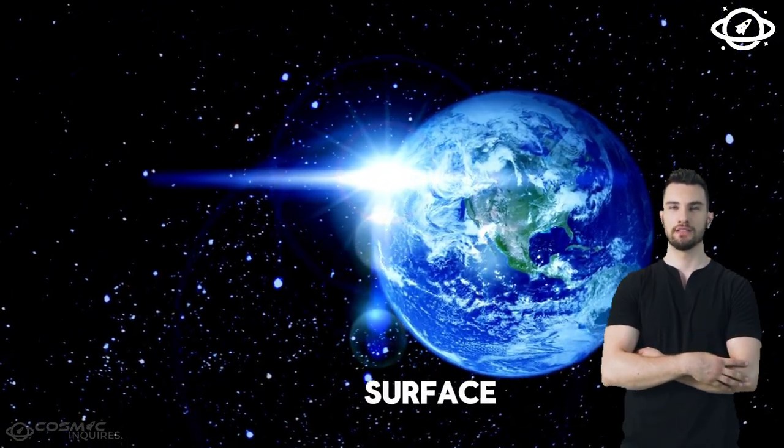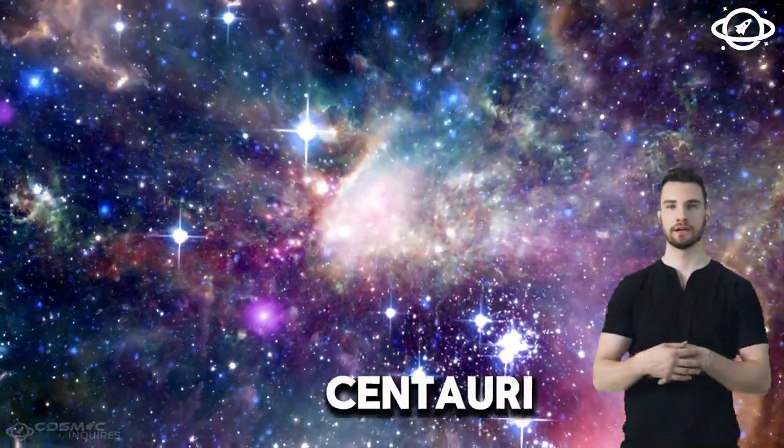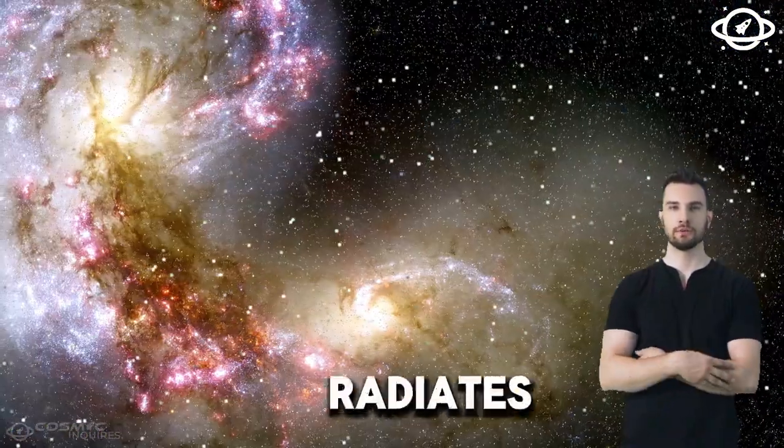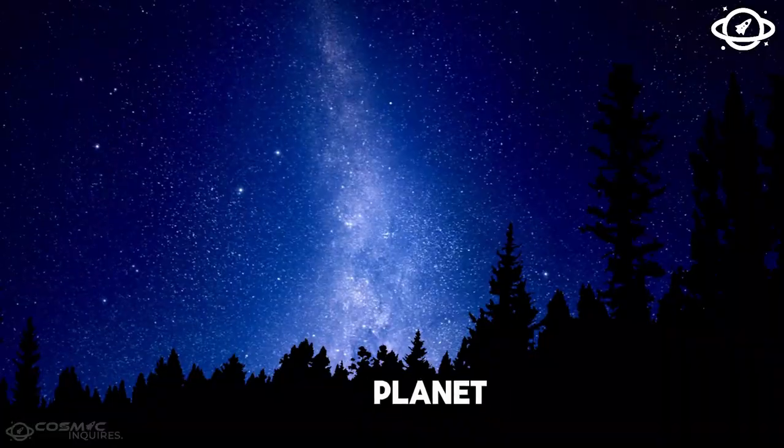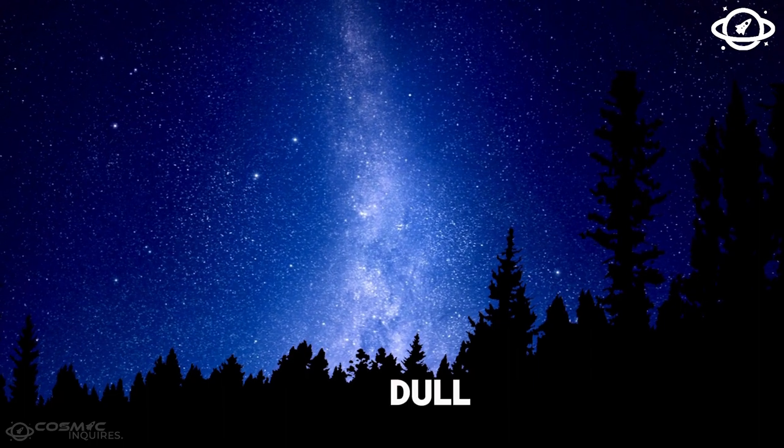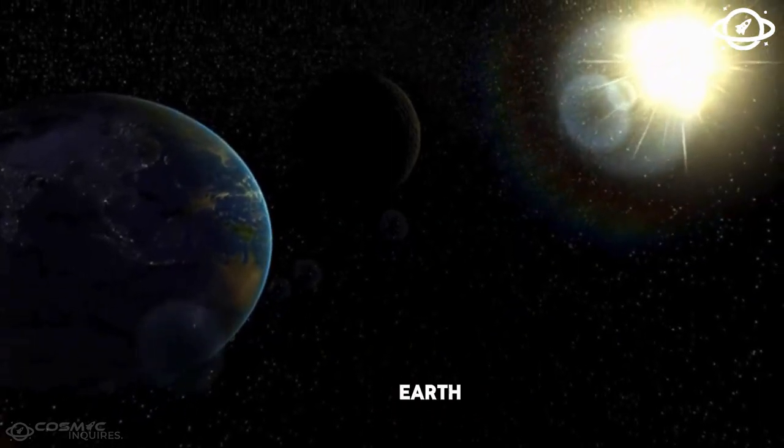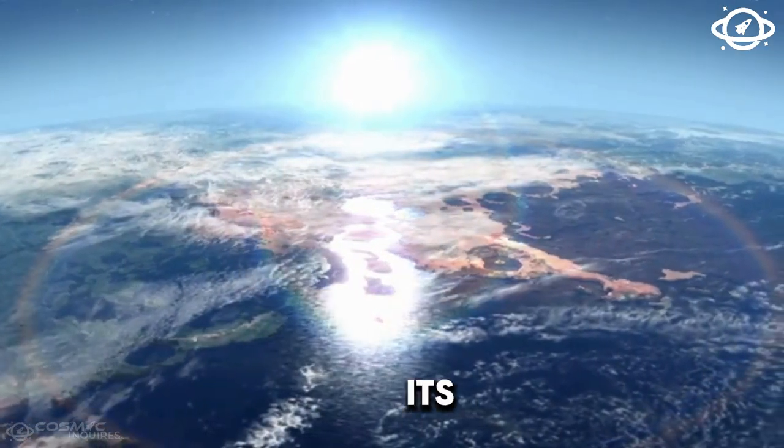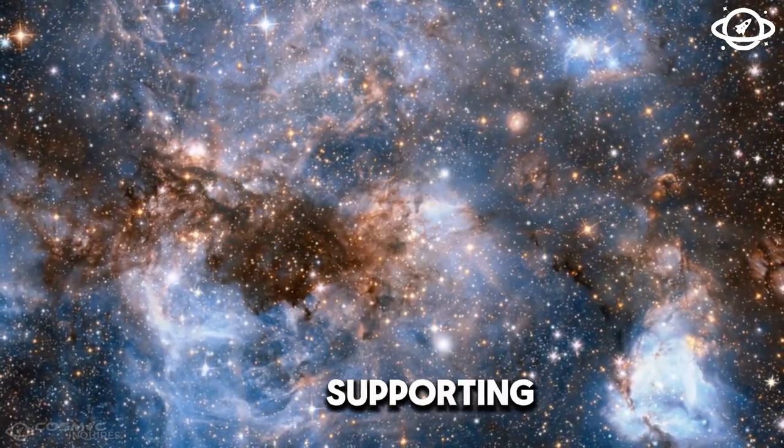One might assume that a planet's surface would be scorched by such a close orbit. Proxima Centauri, on the other hand, is a tiny red dwarf star that radiates far less brightly than the Sun. On the surface of the planet, the star would look like a dull red orb that was roughly three times as big as the Sun as seen from Earth. The planet is therefore in the habitable region of its star, and its surface temperature may be suitable for supporting liquid water.